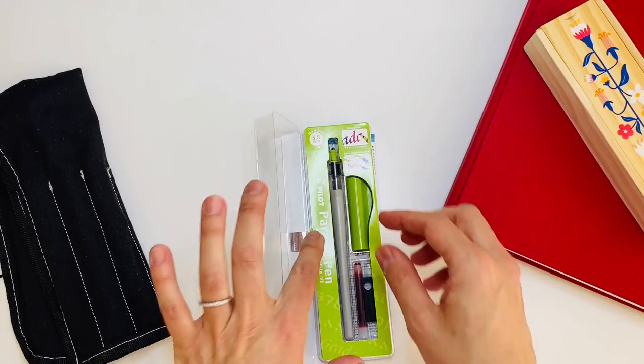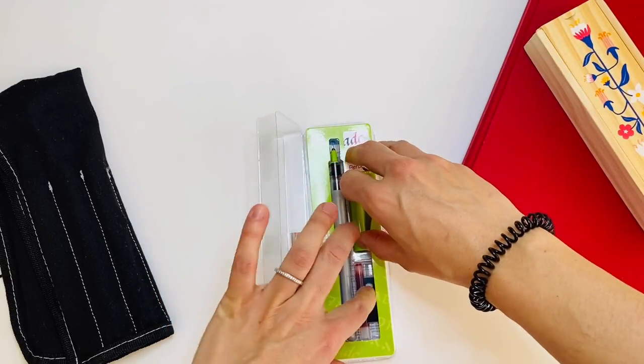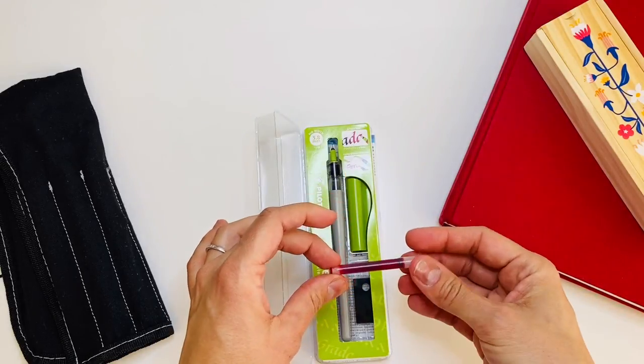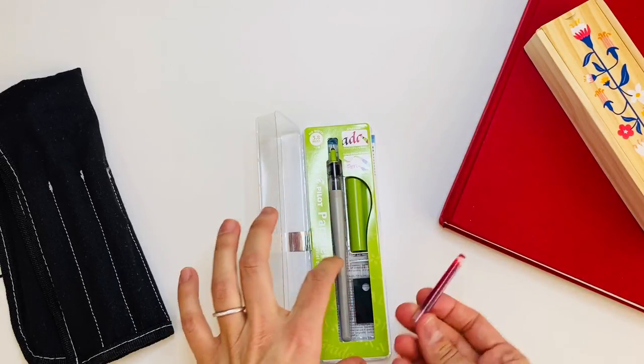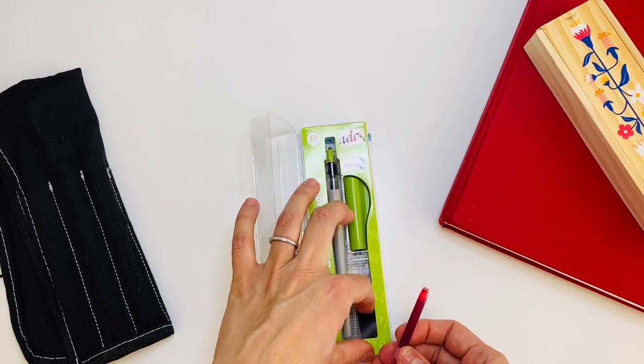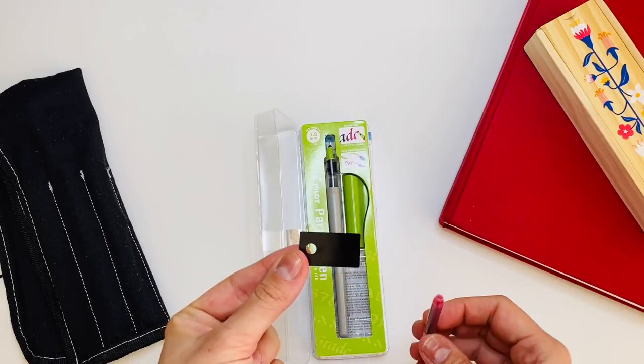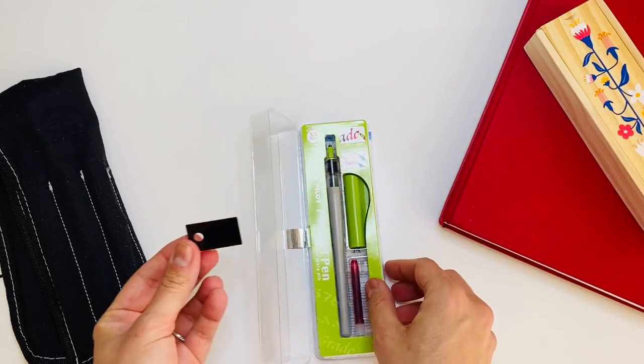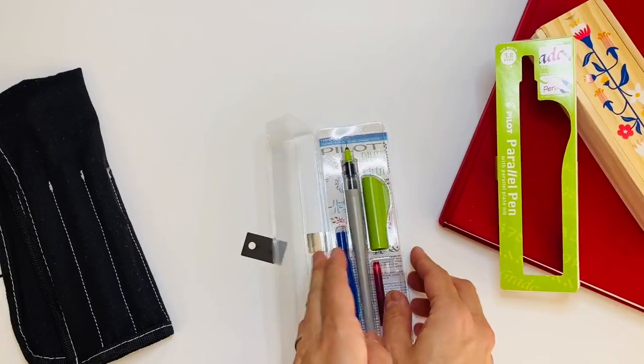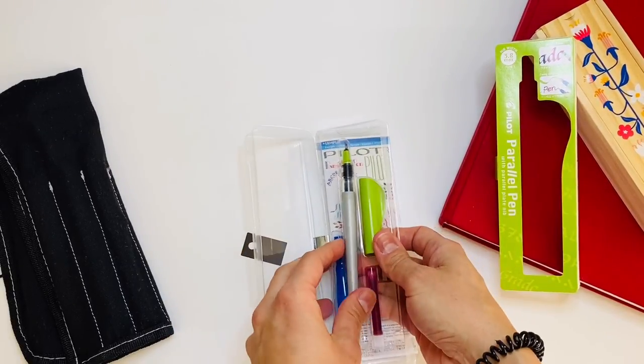The actual pen comes with two cartridges. It comes with a black and a red. They're water-soluble ink. It also comes with a little piece of film which is meant to be used to unclog the pen if it gets clogged.